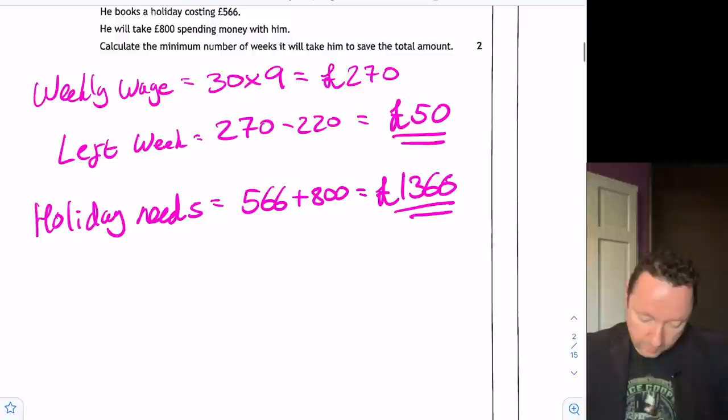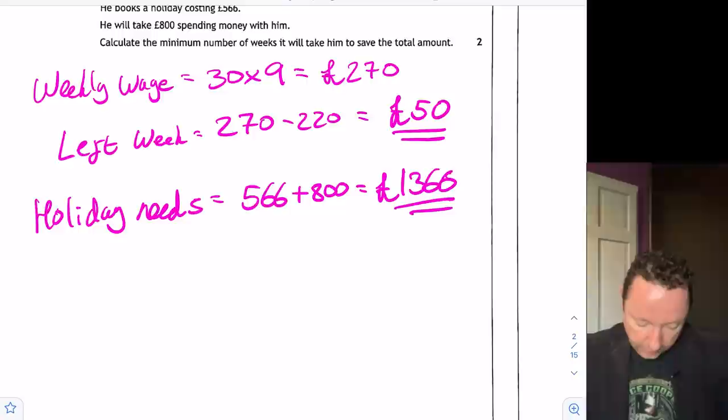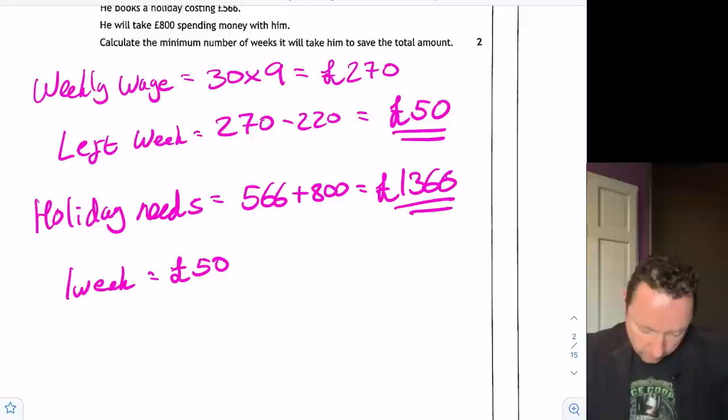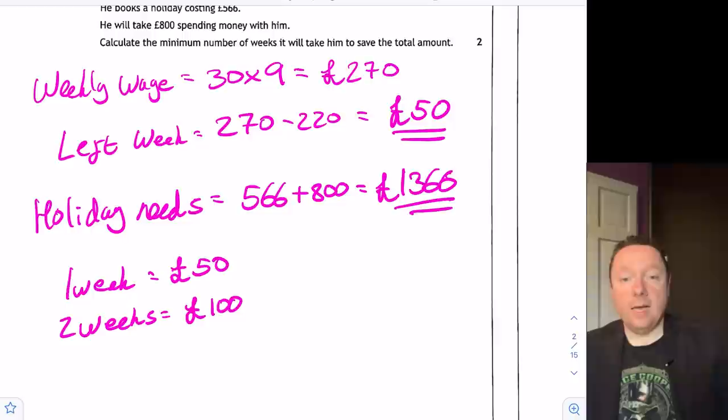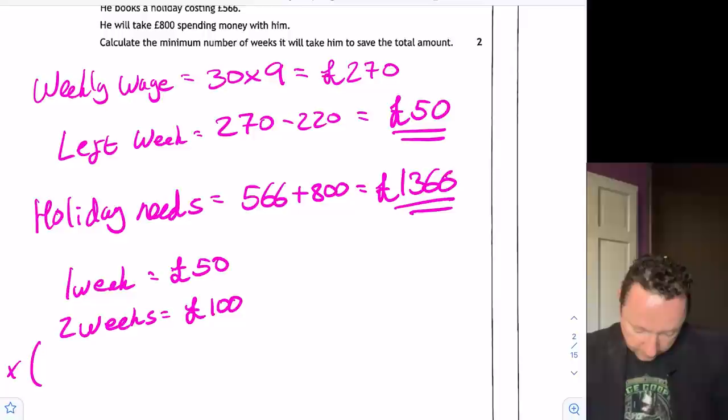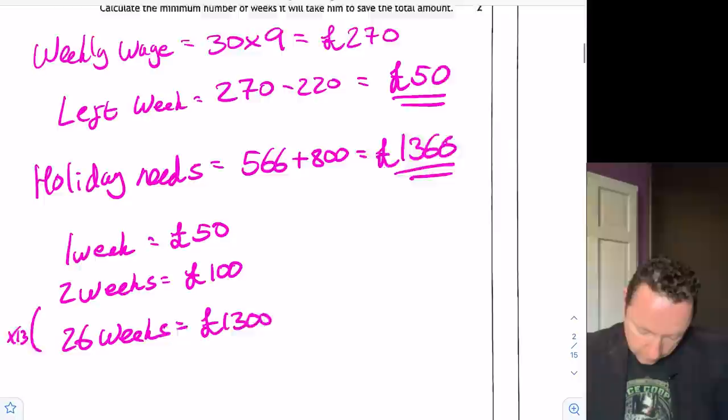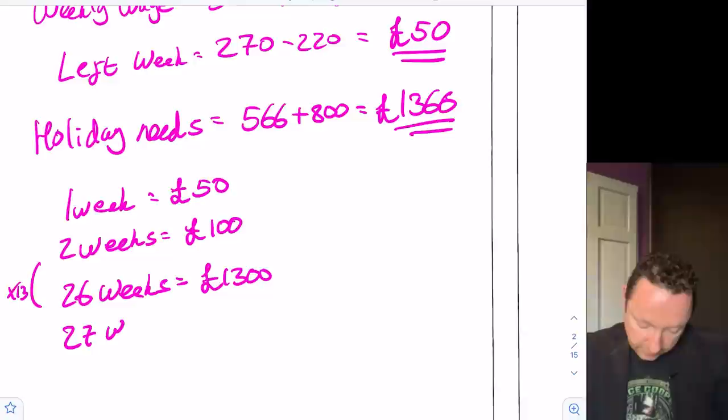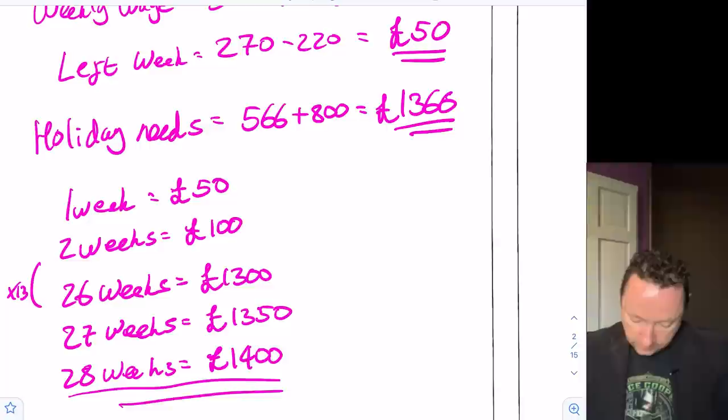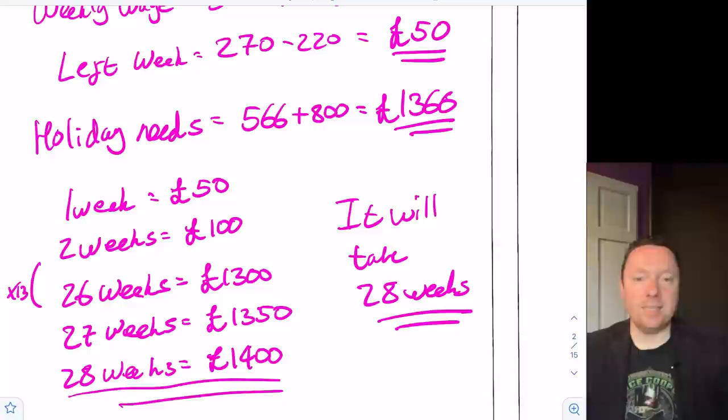He books a holiday costing £566 and he needs £800 spending money. So for the holiday he needs £566 plus £800, which is £1366. So calculate the minimum number of weeks. You need to do £1366 divided by £50. The easiest way is one week equals £50. That means two weeks equals £100. So I need to get up to £1300, so times by 13. So 13 weeks times 2 gives me 26 weeks, which is £1300. So 27 weeks is £1350 and 28 weeks he will have £1400 and he needs £1366. So it will take him 28 weeks.